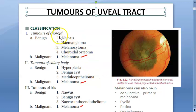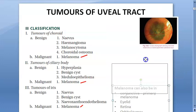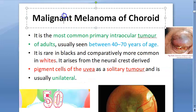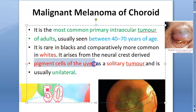In tumors of the uveal tract — which includes the choroid, ciliary body, and iris — the choroid, ciliary body, and iris can each develop melanoma. Melanoma is a generic term; it can also occur in the conjunctiva (called primary melanoma there), the eyelid, retina, and orbit. Malignant melanoma is important because it is the most common primary intraocular tumor of adults, mostly occurring in whites, arising from pigment cells of the uvea, and is unilateral.